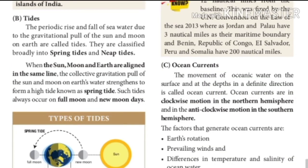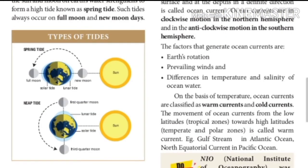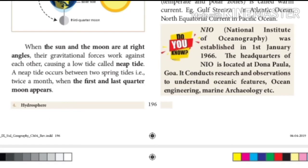The periodic rise and fall of sea water due to the gravitational pull of the sun and moon on earth are called tides. They are classified broadly into spring tides and neap tides. When the sun, moon, and earth are aligned in the same line, the collective gravitational pull of the sun and moon on earth's water strengthens to form a high tide known as a spring tide. Such tides always occur on full moon and new moon days. When the sun and moon are at right angles, their gravitational forces work against each other, causing a low tide called a neap tide. A neap tide occurs between two spring tides — twice a month, when the first and last quarter of the moon appears.